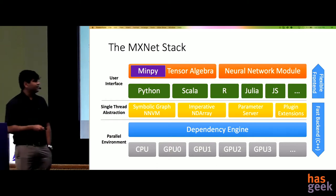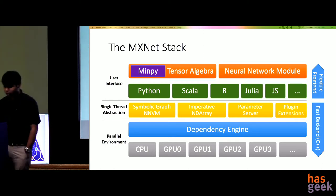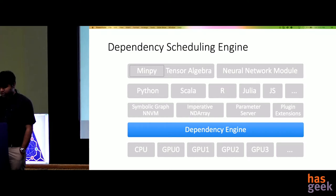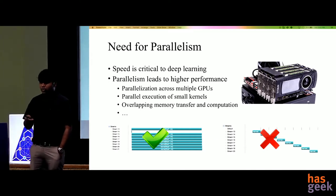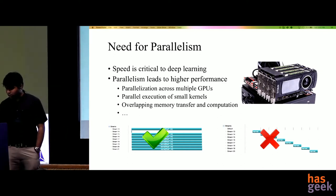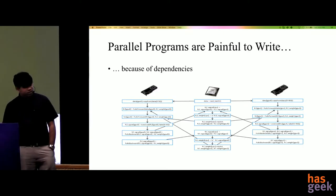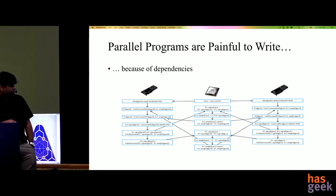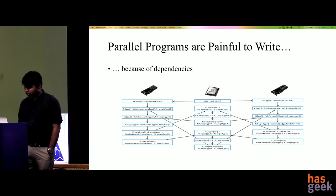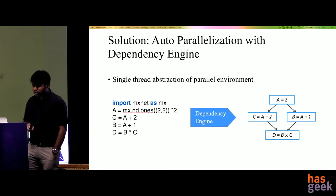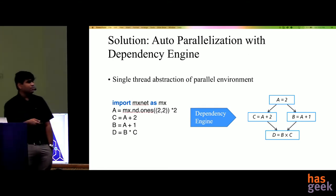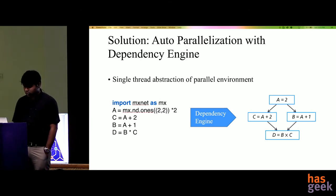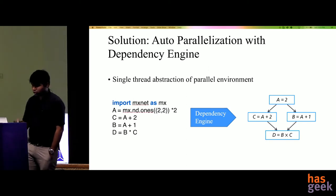Let us look at the building blocks of MXNet. The dependency engine is one of the most important — it supports parallelism, automatically figuring out where operations can be carried out in parallel. Writing parallel programs yourself is very difficult, but this engine finds all opportunities for parallelization by itself. For example, in a small program computing A, B, C, and D, it automatically figures out that C and B can be computed in parallel and then added to arrive at D.